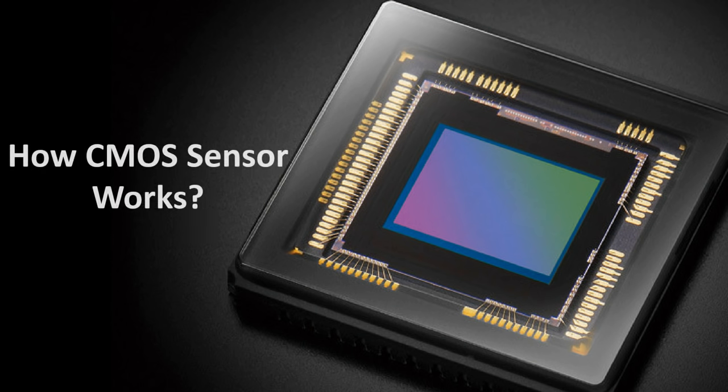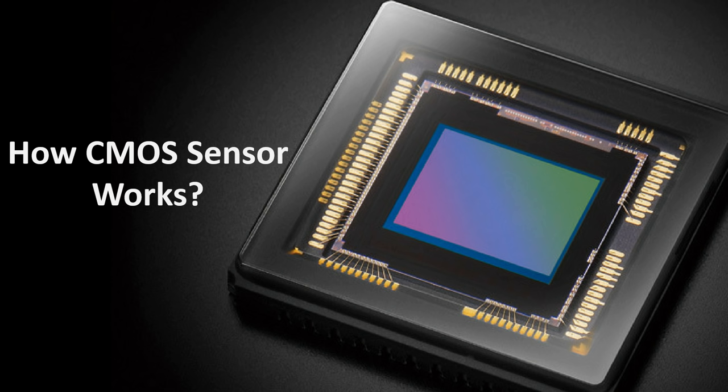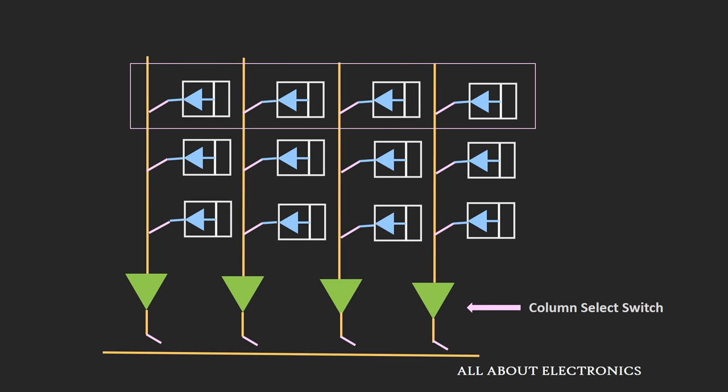Now let us see how the CMOS sensor works. In case of the CMOS sensor, the fabrication technology is very similar to the fabrication technology of integrated circuits. Because of that, many peripheral circuits can be integrated inside a single chip. In the case of the CMOS sensor, the charge-to-voltage conversion as well as the voltage amplification is carried out in the pixel itself. As the charge-to-voltage conversion and amplification is carried out in the pixel itself, the processing speed of the CMOS sensor is much higher than CCD sensors. In the CMOS sensor, the voltage generated by each pixel is read in a line-by-line fashion. First, the first row of pixels is activated using this pixel select switch.